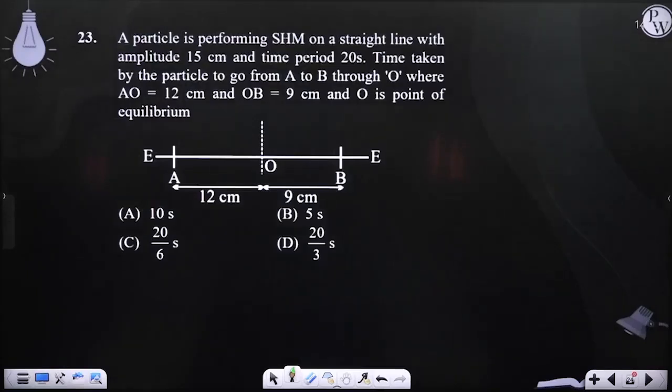Let's come to question number 23. A particle is performing SHM on a straight line with amplitude 15 cm, time period 20 seconds.